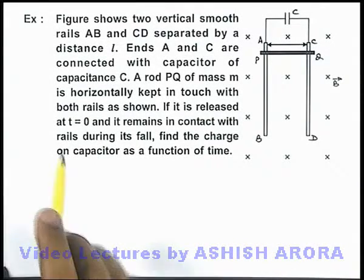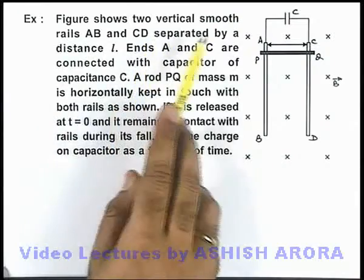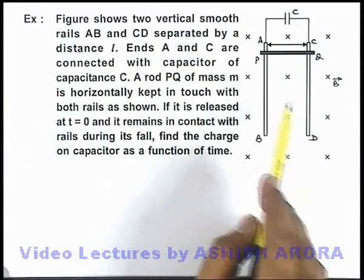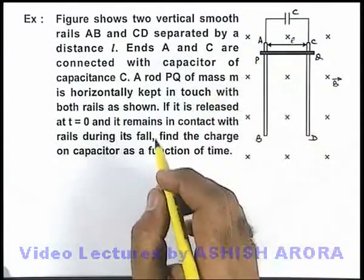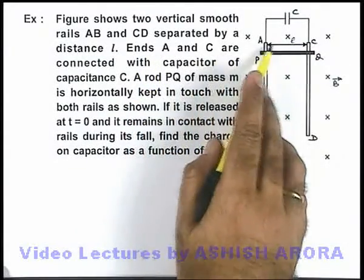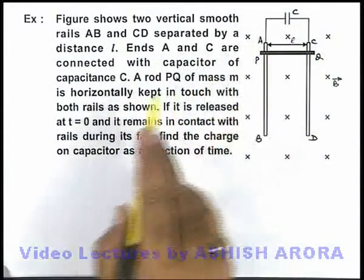In this example, we are given that the figure shows two vertical smooth rails AB and CD, which are separated by a distance l. The ends A and C are connected with a capacitor of capacitance C.